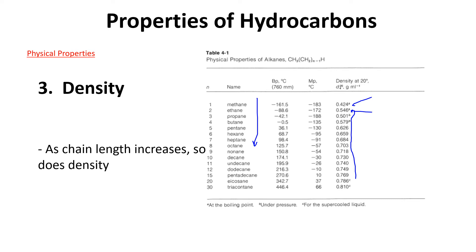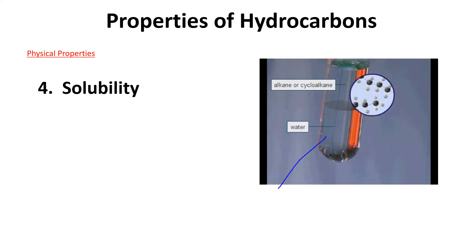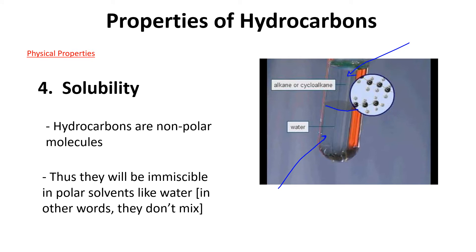Lastly, solubility. Here's our picture - we've got polar water and we have a non-polar cycloalkane here. You can see there's a division, so they're clearly not mixing, they're immiscible. Hydrocarbons are non-polar, so they will be immiscible in polar solvents like water. In other words, they do not mix.